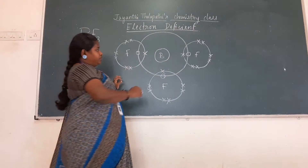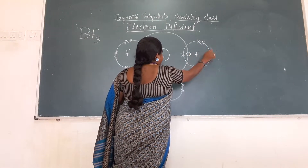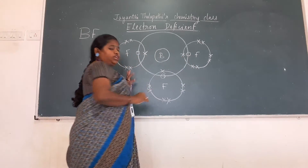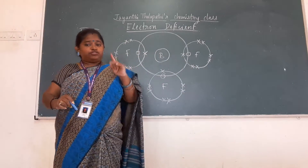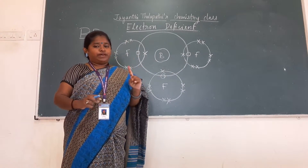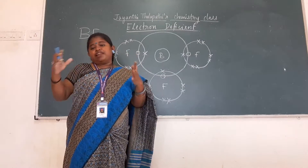If you count the electrons: 2, 3, 4, 5, 6, 7, 8 — so 3 lone pair electrons and one bond pair gives 8 electrons. That satisfies the octet for fluorine.